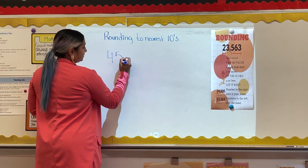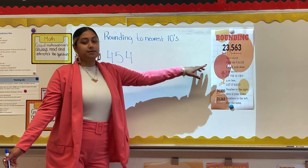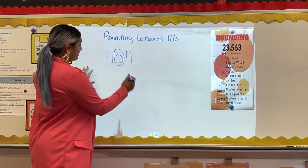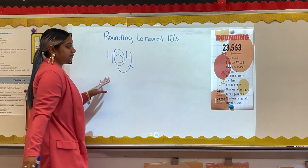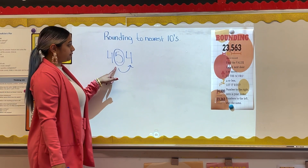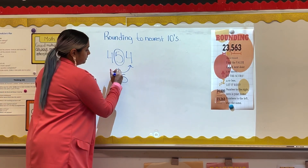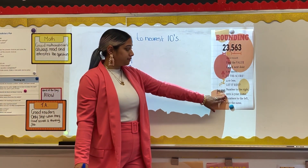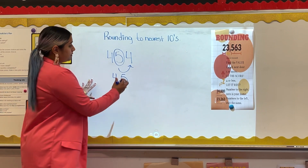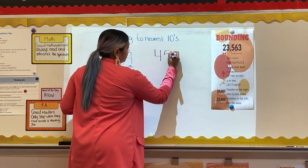Here's another example rounding to the nearest tens: 454. We look at the digit in the place value we are rounding to, and the digit to its right tells us what to do. Our digit in the tens place is five. I'm going to look to my neighbor, which is four. If the digit to the right is zero, one, two, three, or four, our digit stays the same. So my five stays the same, as well as my four, and the digit to the right gets changed into a zero. Our answer is 450.